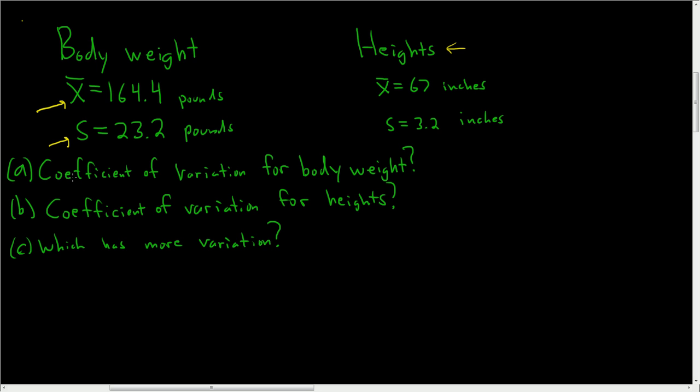So in this problem we're asked to do three things. We want the coefficient of variation for the body weight, then we want the coefficient of variation for the heights, and then we want to know which has more variation. So let's go ahead and work it out.